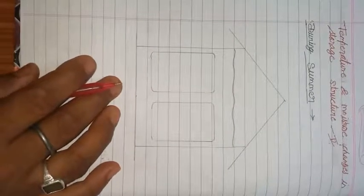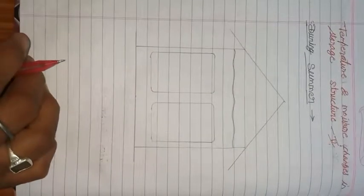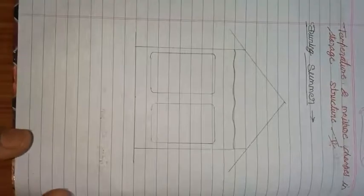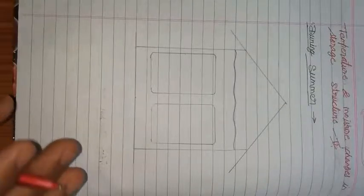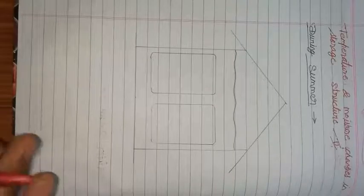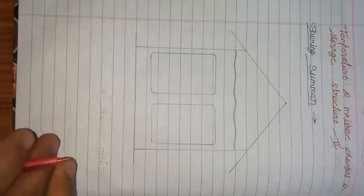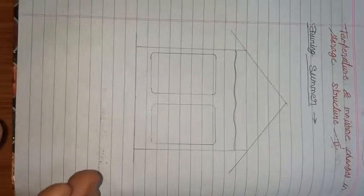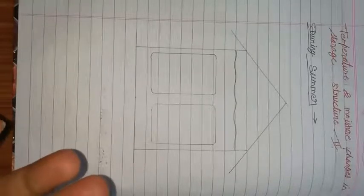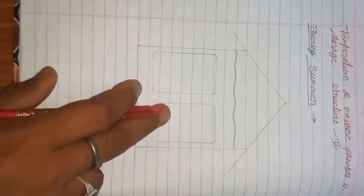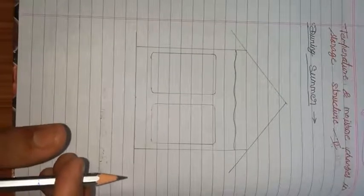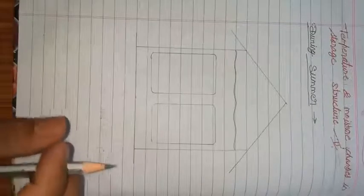The same phenomena works here. The difference is just in the season. In winter season, the temperature is very down. In summer season, the temperature is very high compared to the inner temperature of the grain bin or grain storage structure. So, this diagram shows the loss of grains due to the temperature change in storage.